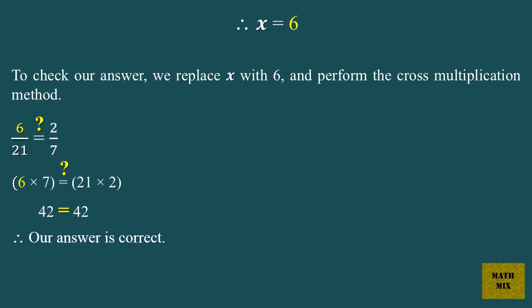To check our answer, we replace x with 6 and perform the cross multiplication method. Does 6 over 21 equal 2 over 7? Does 6 times 7 equal 21 times 2? 42 equals 42. Therefore, our answer is correct.